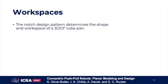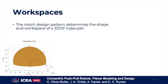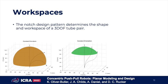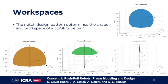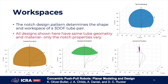The notch design pattern determines the shape and workspace of a 3DOF tube pair. Leveraging the notch design, we can achieve constant curvature robots, constant tip orientation, constant tip position in a principal direction, and tip-first bending. All workspaces shown have the same tube diameter, wall thickness, and material. Each workspace is solely dictated by the notch patterns alone.